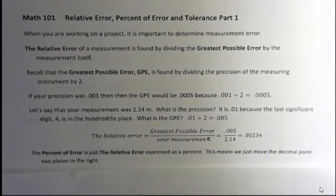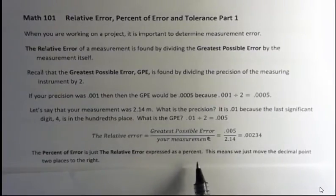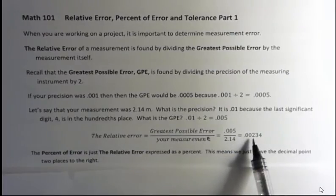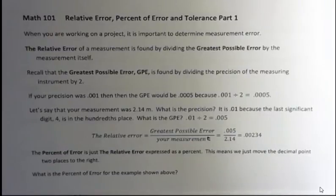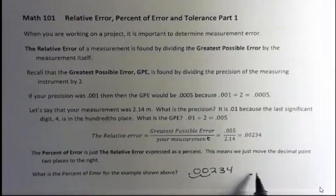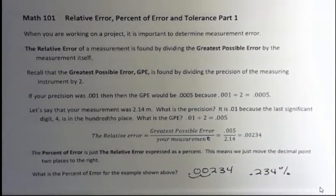The percent of error is just the relative error that we just found expressed as a percent. And remember that when we want to find a percent, when we're given a decimal number, we just move that over two places to get our percent. So what is the percent of error for the example shown above? Well we go from 0.00234, move the decimal point two places and it's 0.234 percent. That's the relative error expressed as a percent, which is called the percent of error.